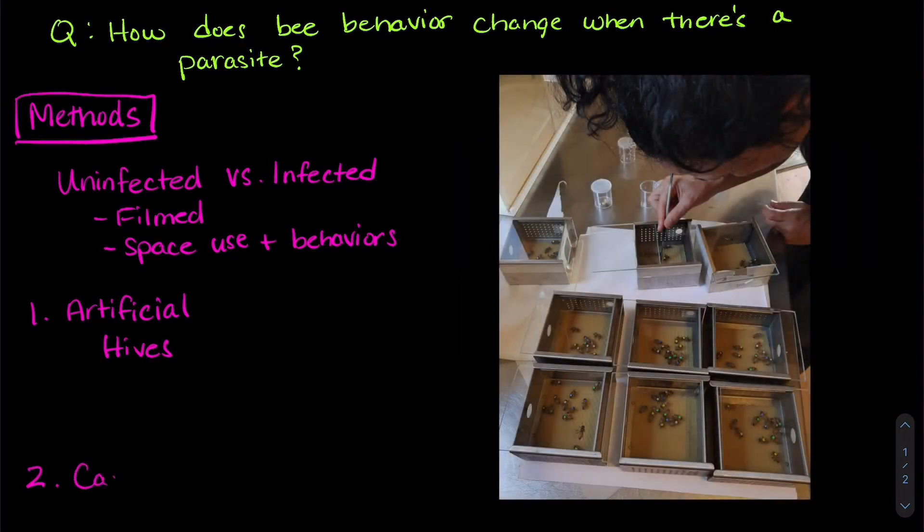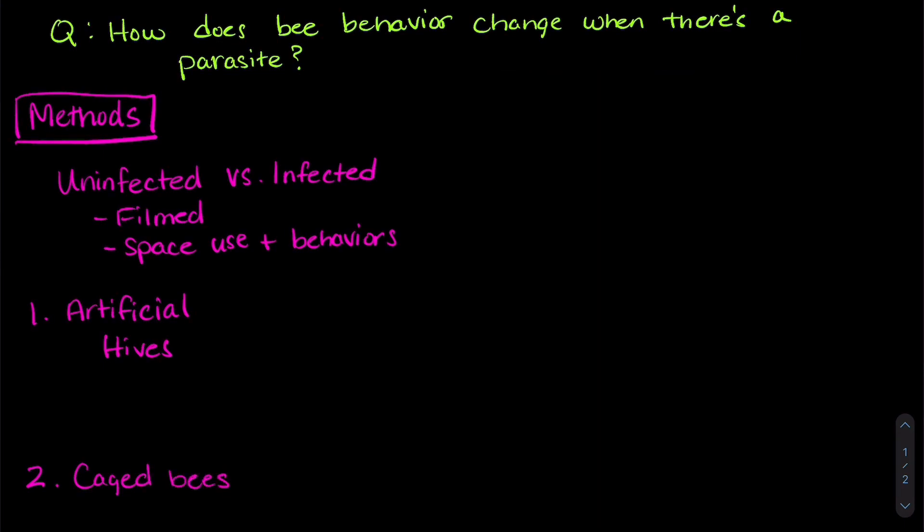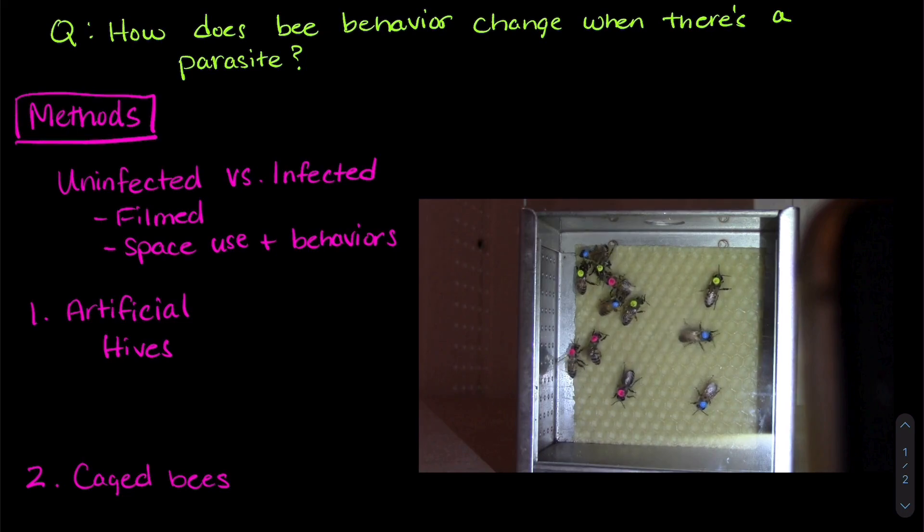The second experiment involved caged bees in the lab. They compared bees that were purposefully infected with a parasitic mite with those that remained uninfected.